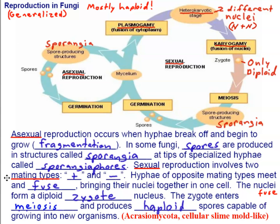Fungi have a life cycle very similar to the acrasiomycetes — the cellular slime molds classified in Kingdom Protista — which is one reason fungi are thought to share common ancestry with them. Looking at this life cycle diagram, the first thing to note is that it's mostly haploid. In the diagram, all the bluish color represents haploid. There is a special condition where two nuclei occupy the same cell, known as heterokaryotic.